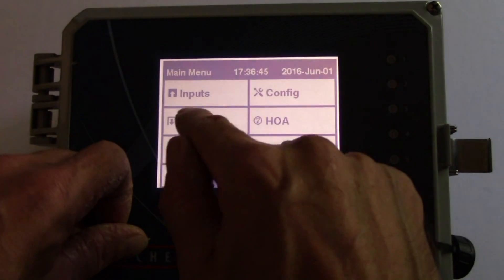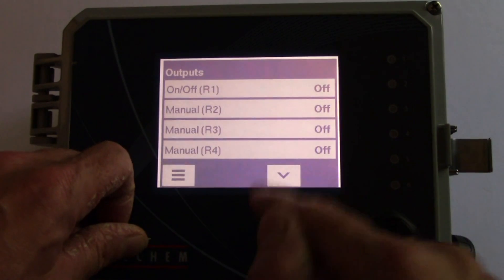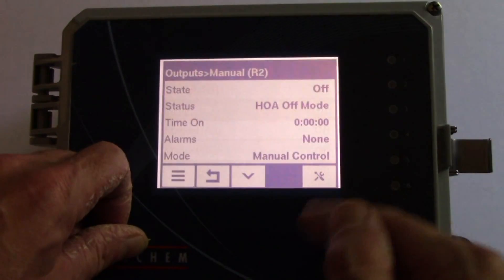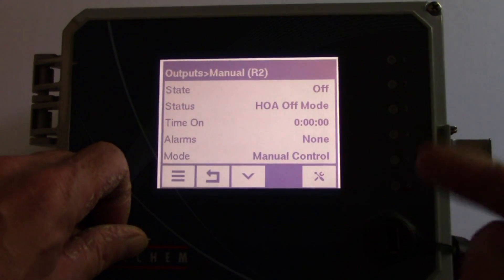Go back to the main menu, outputs, and now the inhibitor feed pump relay. Press relay 2. For this example, that pump is wired into relay 2.